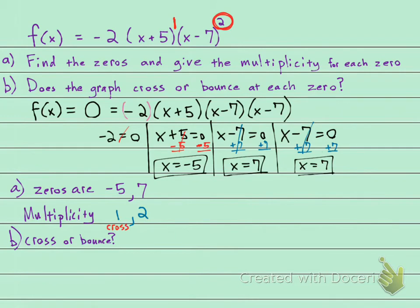And if your multiplicity is even, 2, 4, 6, 8, then it will touch and turn around. Or as I call it, it's going to bounce. So this really answers the questions that they ask.